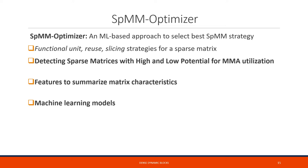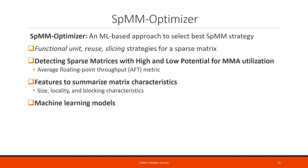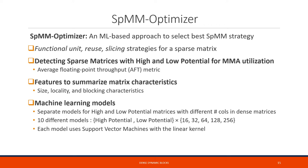The SPMM optimizer has three components. First, we design a mechanism to detect the potential for getting benefits from utilizing MMA units — specifically, average floating point throughput metrics, AFT, which categorize sparse matrices into low and high potential groups. Second, SPMM optimizer has a novel feature set to summarize matrix characteristics in terms of size, locality, and blocking characteristics. Finally, we train separate machine learning models for high and low potential matrices with different numbers of columns in the dense matrices. In our work, we train 10 different models, and each ML model uses support vector machines with linear kernel.